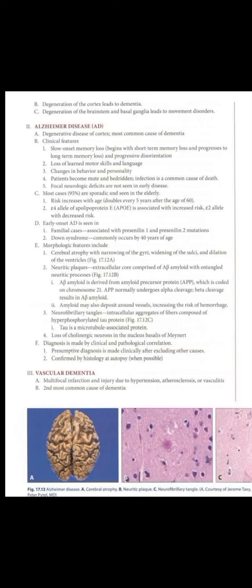The E4 allele of apolipoprotein E (APOE) is associated with increased risk, while the E2 allele is associated with decreased risk. Early-onset AD is seen in familial cases associated with presenilin-1 and presenilin-2 mutations. Down syndrome patients commonly develop AD by 40 years of age. Morphologic features include cerebral atrophy with narrowing of the gyri, widening of the sulci, and dilation of the ventricles.